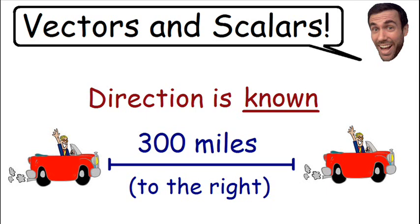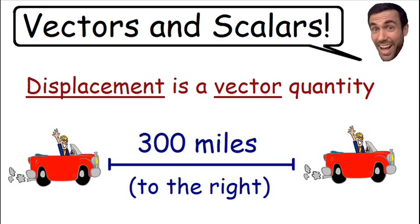So because we know the direction, displacement is a vector quantity. Displacement has a magnitude which in this example is 300 miles, and displacement also has direction which in this example is to the right.